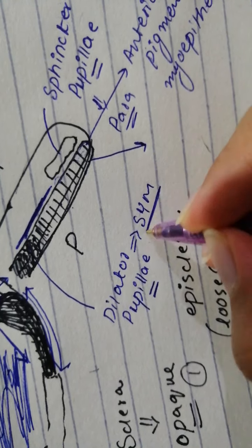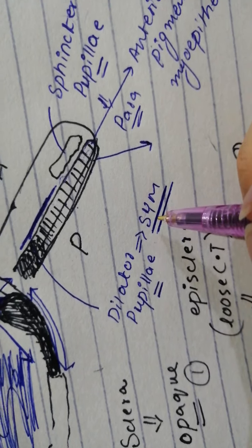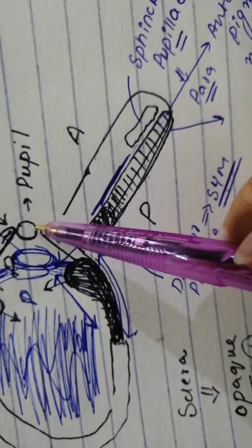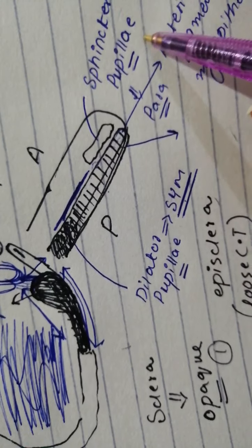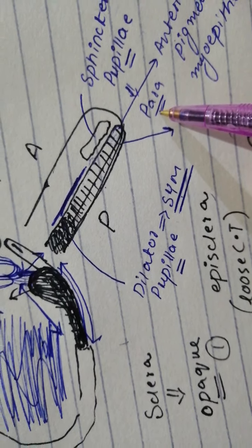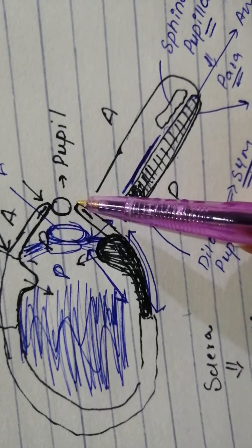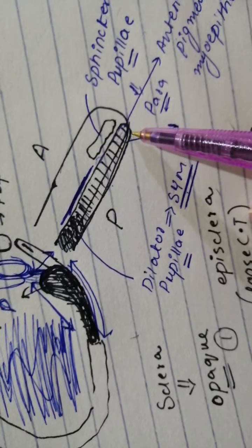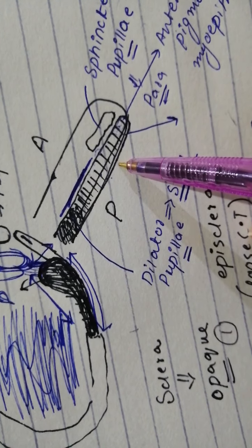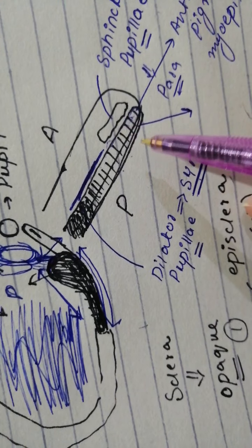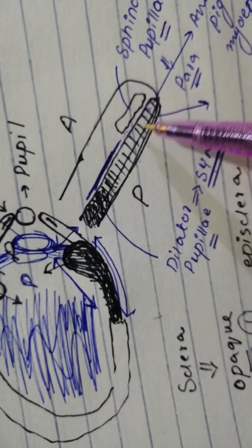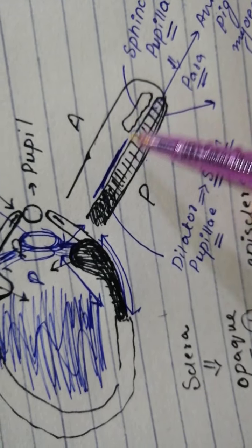This one contracts with sympathetic activation and leads to an increase in the aperture size. This one contracts with parasympathetic activation and leads to a decrease in the aperture size. And the point of this heavy pigmentation is the fact that this makes sure that no light enters the eyeball except to the pupil because the pigment simply absorbs it.